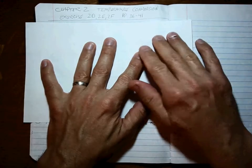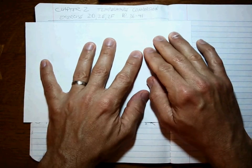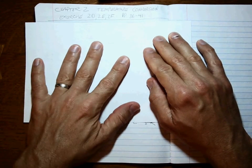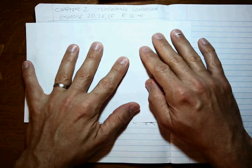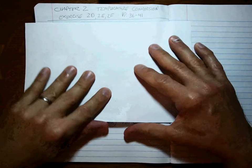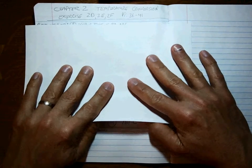Okay, the last section in Chapter 2 are temperature conversions, exercises 2D, 2E, and 2F, pages 36 through 41. A couple of things to note.